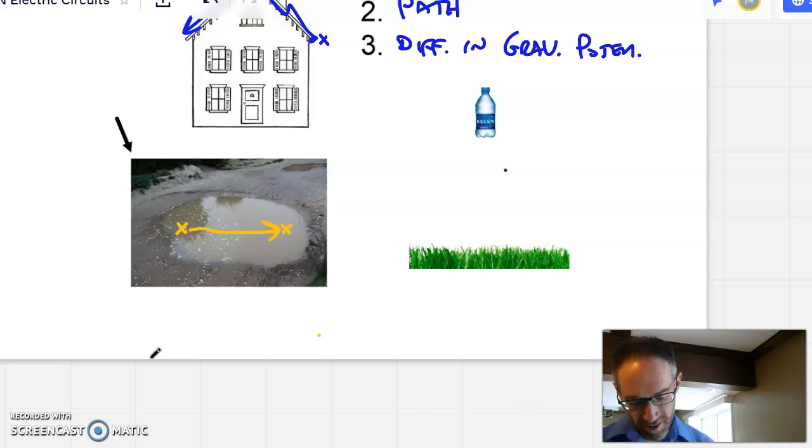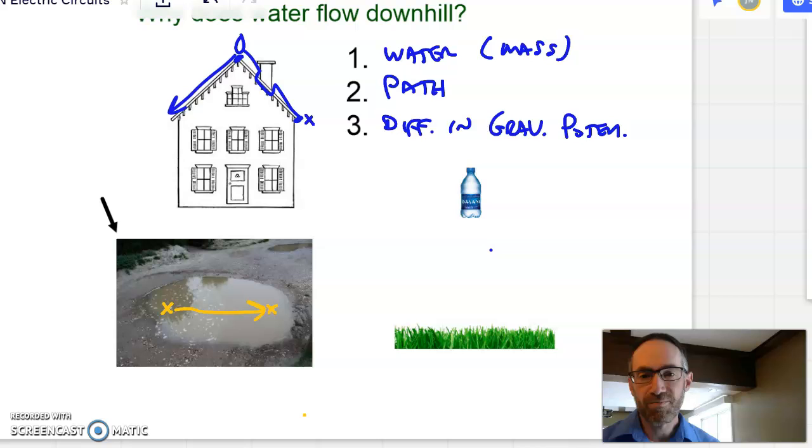Well, something is missing. Remember what you need? Water, a path, and a difference in gravitational potential. It's the third one that's missing. The water's there, of course. The path is there. It could flow if it wanted to, but there's no difference in gravitational potential. Those two spots are on an equi-potential surface, and so there's no gravitational potential, so it's number three that we don't have.